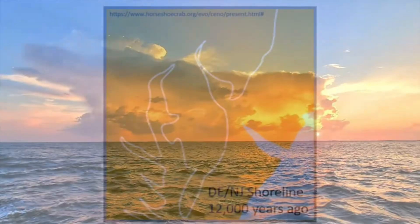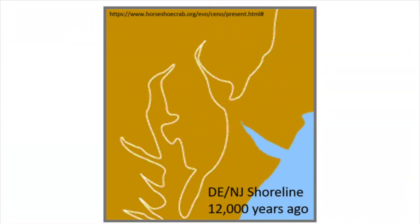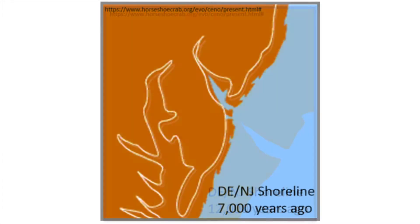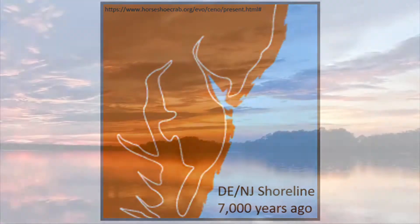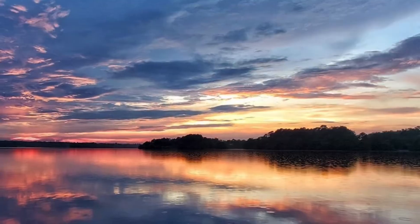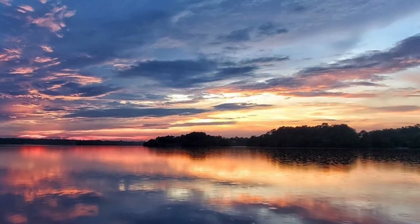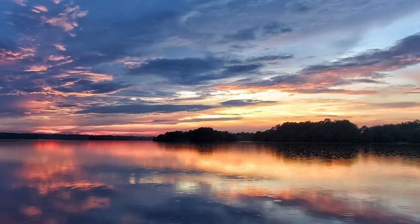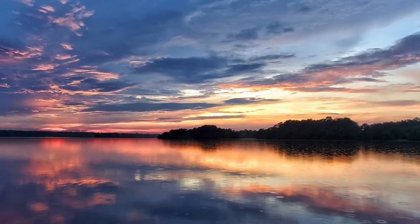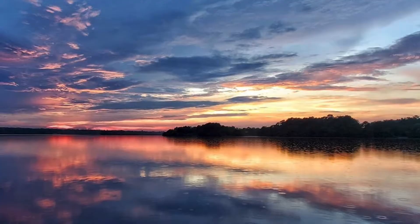About 9,000 years ago, the Delaware Bay, once a river valley surrounded by hardwood forests, became flooded and the terrestrial plant and forest communities that once dominated the valley were drowned. This same scenario played out all over the world.